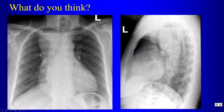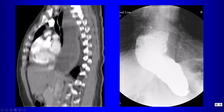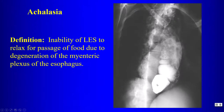Next case: a large mass extending below the diaphragm with mass effect on the trachea and, importantly, an air-fluid level on both frontal and lateral views. This represents a dilated esophagus full of debris — an example of achalasia. With achalasia the esophagus is dilated down to the gastroesophageal junction, as shown on CT and sagittal reformats. The cause is inability of the lower esophageal sphincter to relax for passage of food.